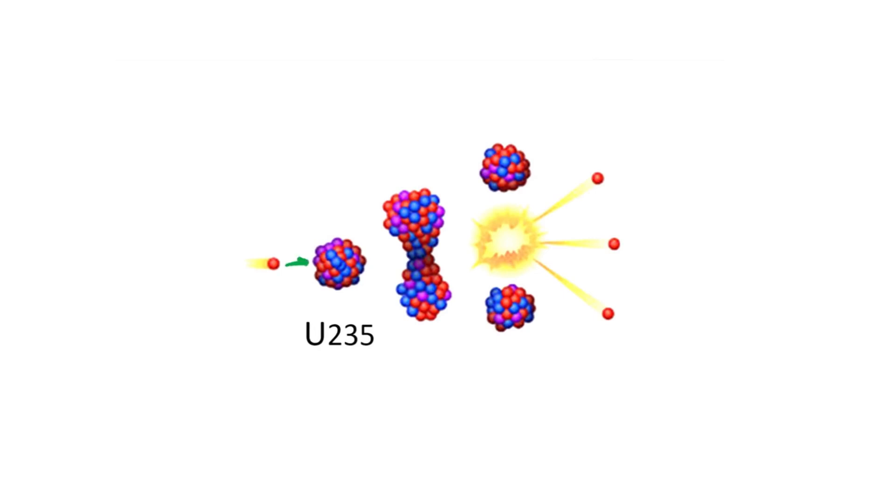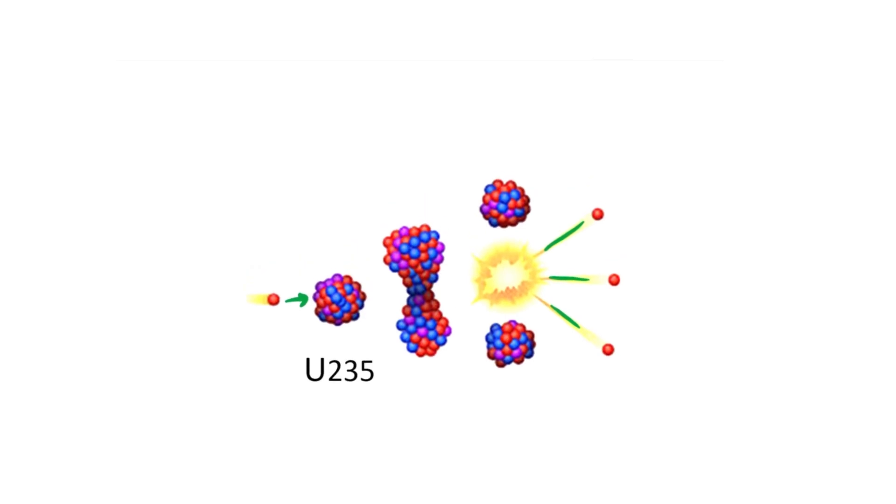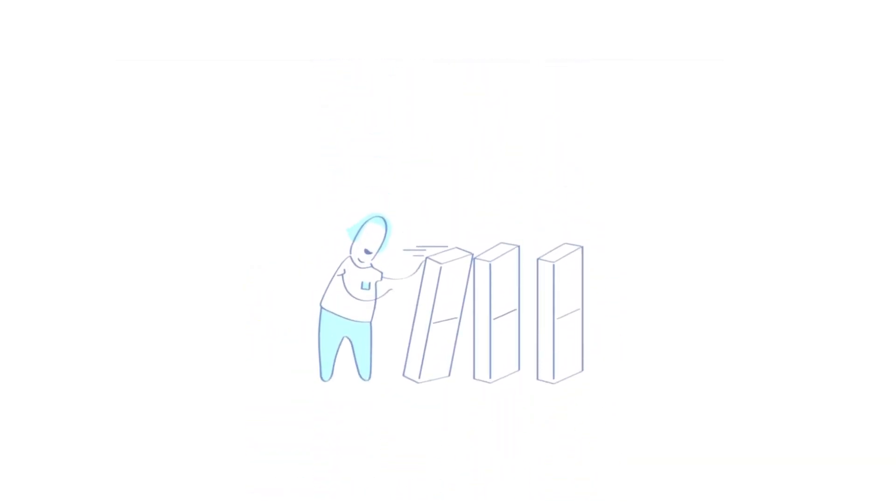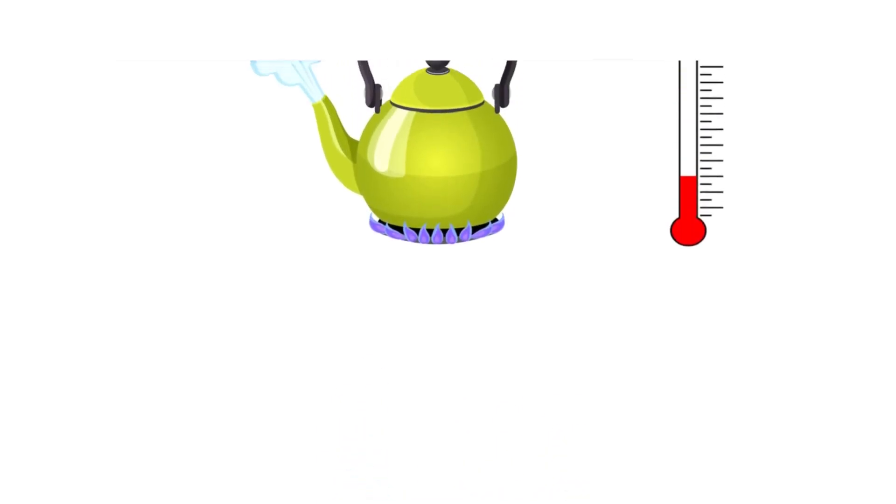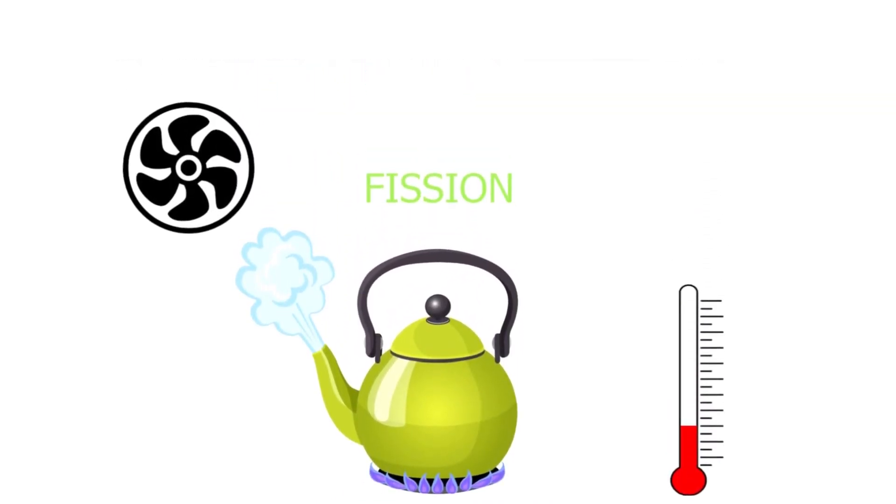When free-floating neutrons hit a uranium-235 isotope, more neutrons get knocked off. This interaction releases a great deal of heat, and so starts the chain reaction. With more neutrons colliding with uranium isotopes, the surroundings get hotter and hotter.